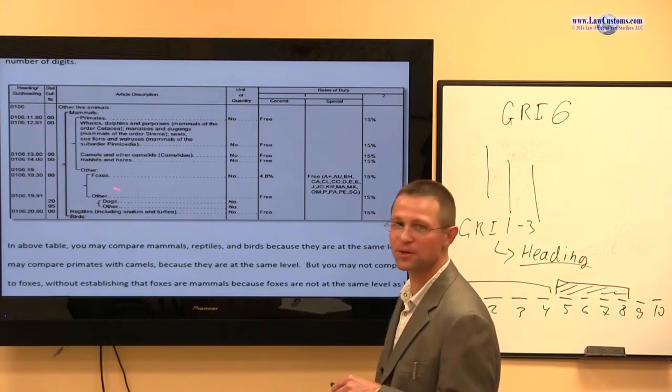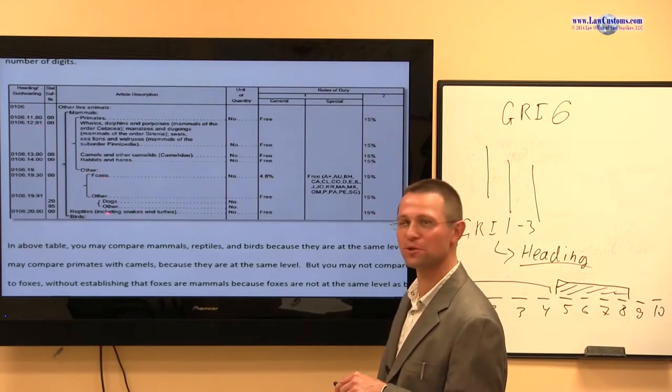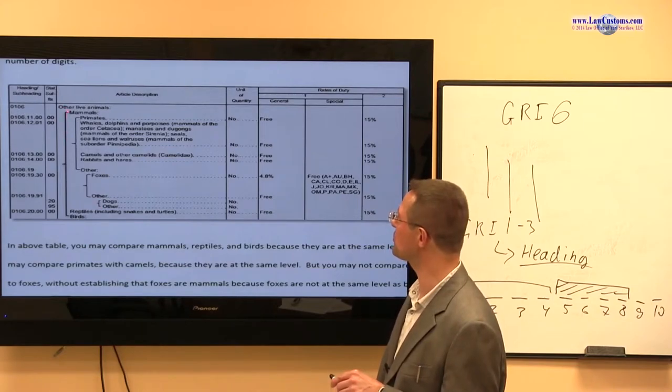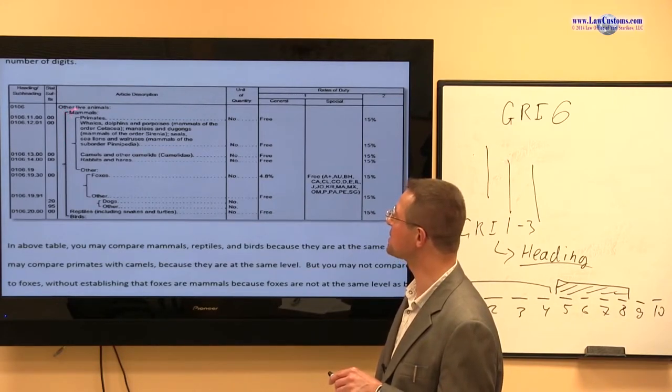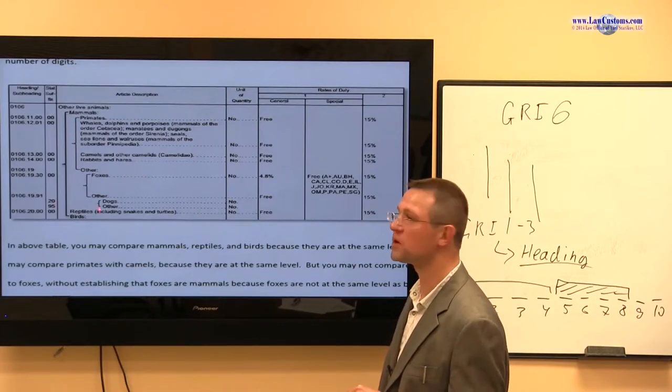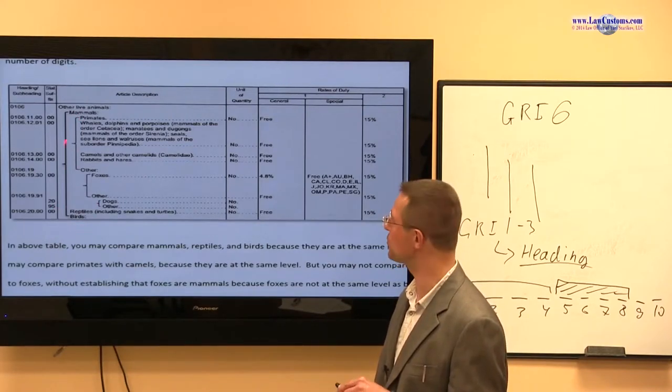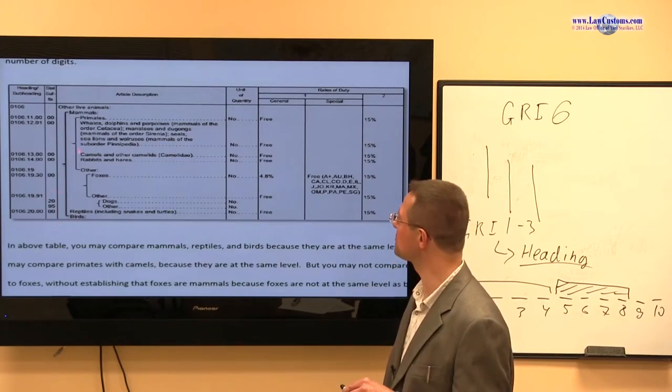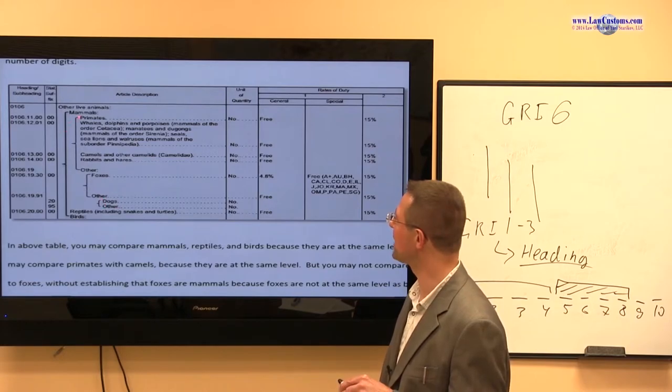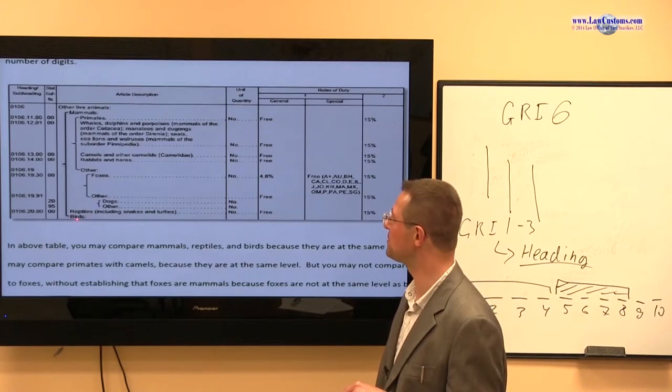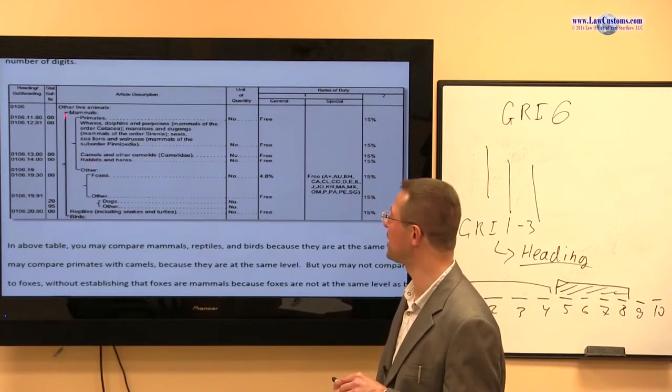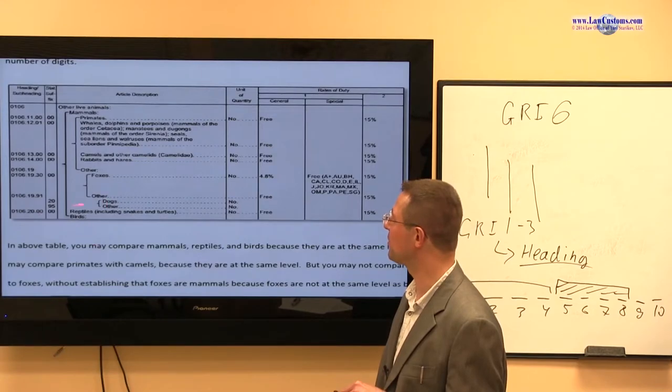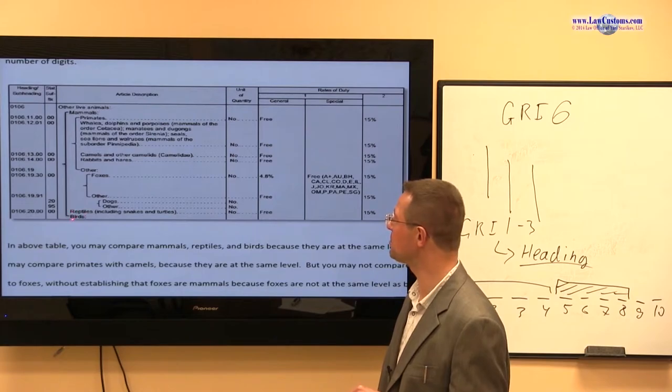Before we can ask a question, is it a fox or is it a dog, we first of all have to determine, is it a mammal, is it a reptile, or is it a bird? Because this is a breakdown. If it's a crocodile, we do not try to figure out under the mammal section. We go to the reptiles. If it's a bird, we do not go to the mammals. So first question is, is it a mammal, a reptile, or a bird?